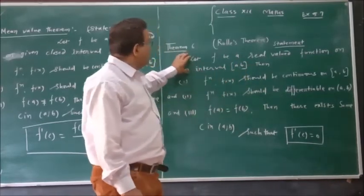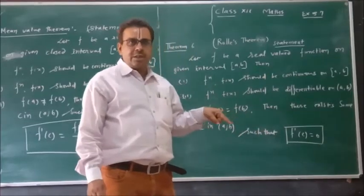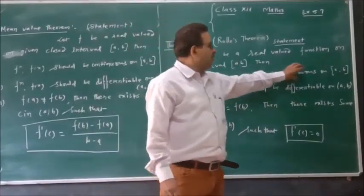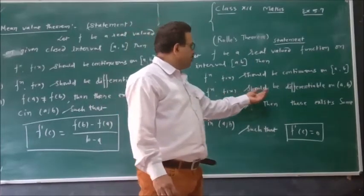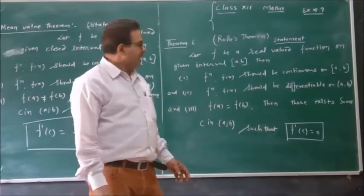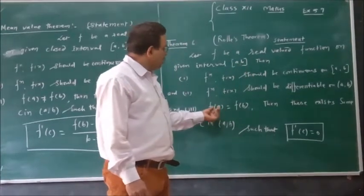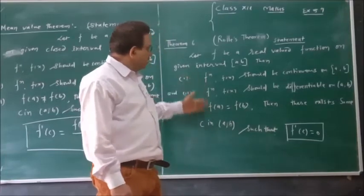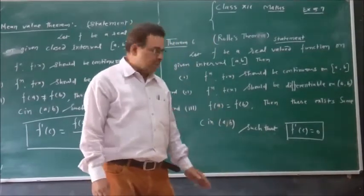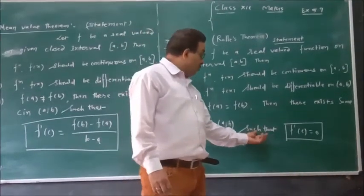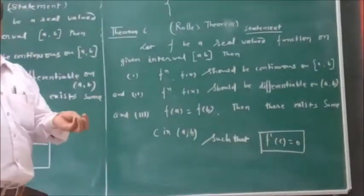Remember the statement for Roll's Theorem: your first point — the function f(x) should be continuous on closed interval a to b. Second point — your function f(x) should be differentiable on open interval a to b. And third point — f(a) should be equal to f(b). Then there exists some c in the open interval a to b such that f dash c equals 0. After these conditions, Roll's Theorem will be verified.